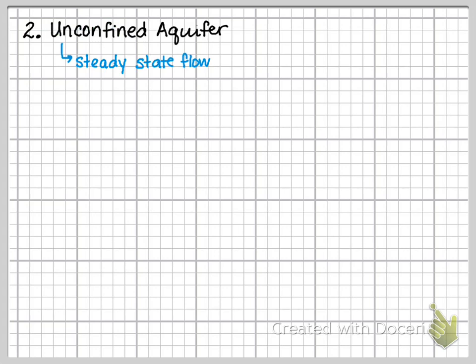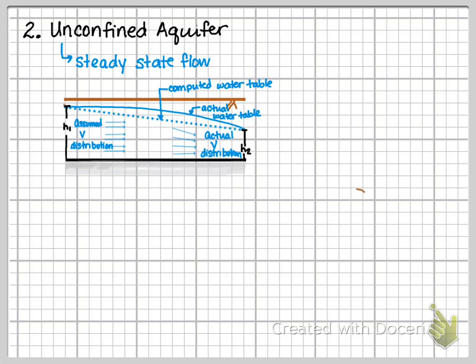In our next example, we're going to talk about an unconfined aquifer under steady state. In an unconfined aquifer, we notice that the thickness varies because of the groundwater table. Even though the computed water table follows a linear projection, the actual water table has a curvature to it. We assume a velocity distribution that is uniform, but the actual water distribution varies, as shown in the schematic.